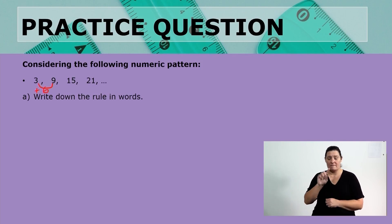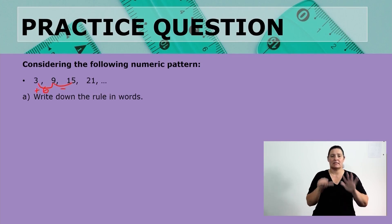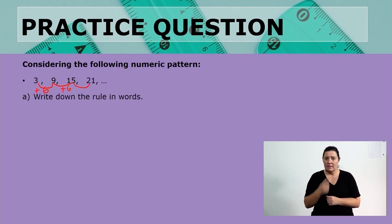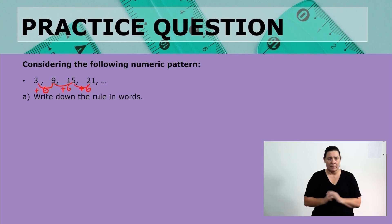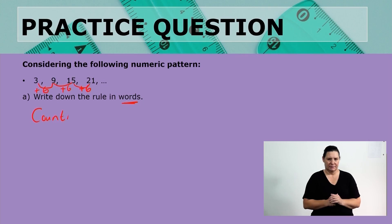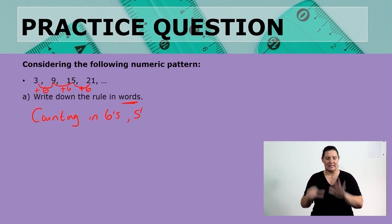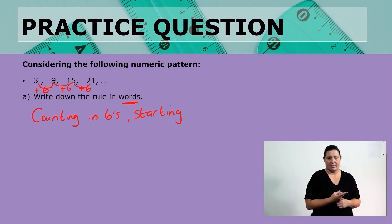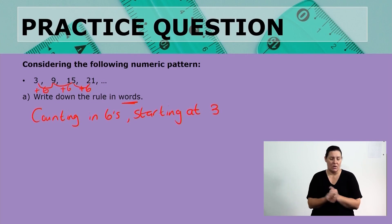When we say 15 minus 9, that also gives us a 6. This means that we are adding 6 to get to the next number. When we say 21 minus 15, that also gives us a 6. So, how can we describe what is happening here in words? We can see that we are just counting in 6s, but we started at 3.